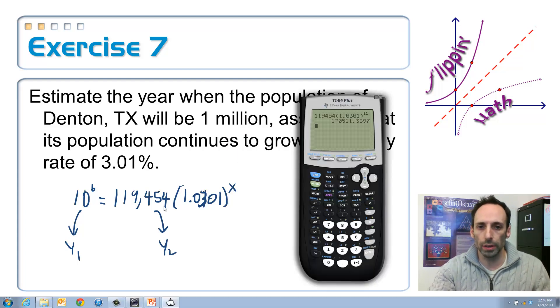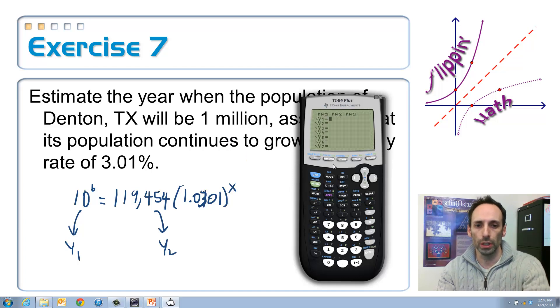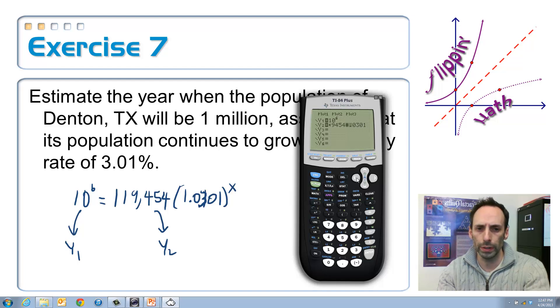Let's give that a try. Let's pull up this calculator again. This time, let's go to y equals. And under the first one, we're going to type in 10 to the 6th. So there's our first equation. That's the left-hand side of the equation that we're trying to find. And then on the right-hand side, 119,454. And I still have the times 1.0301. Notice I didn't put parentheses this time. But I didn't put 1 either. That's going to be a problem. Second insert 1. I put it in the wrong place. Times 1. There we go. Raised to the x power. Hit enter.